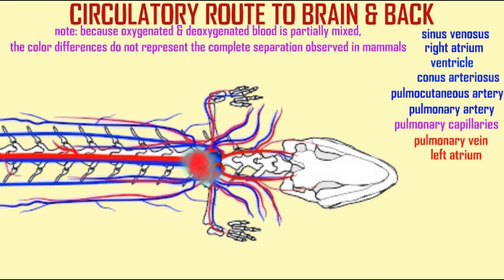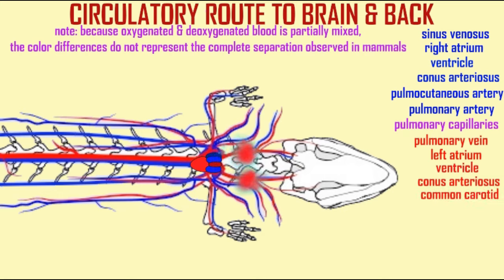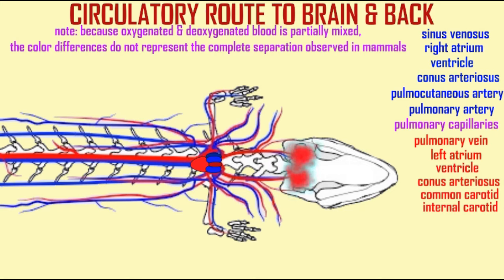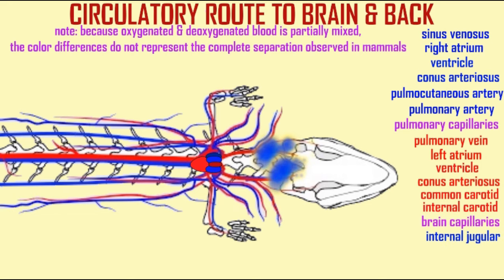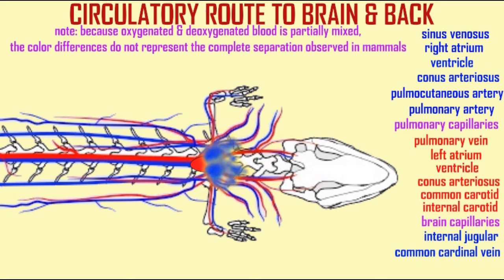Oxygenated blood returns in the pulmonary vein, which would then enter the left atrium, then the single ventricle, then be pumped into the conus arteriosus, kept largely separated from the deoxygenated blood thanks to a spiral valve, and thus be sent to the brain and back. That is not technically incorrect.